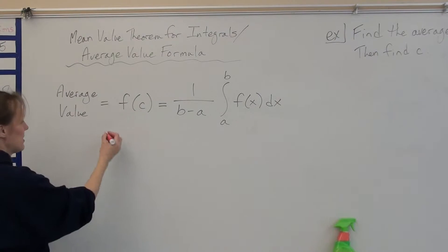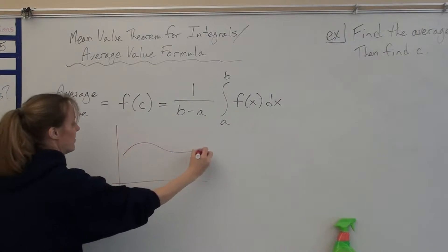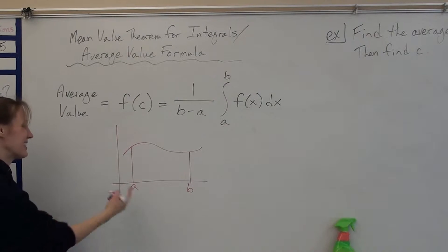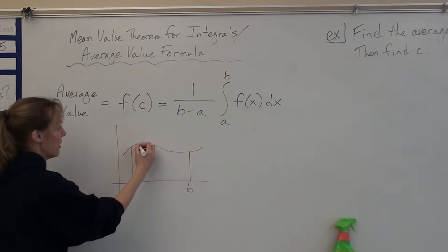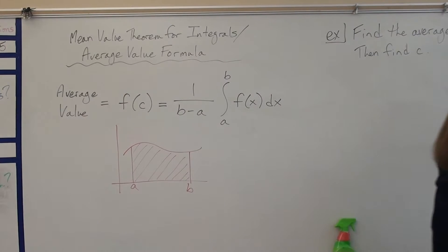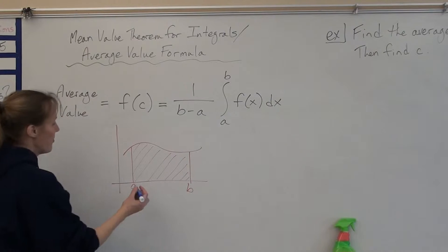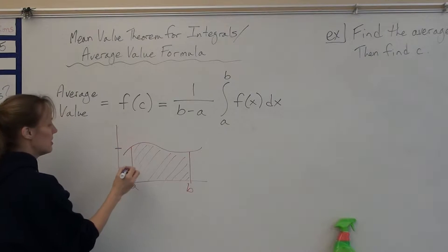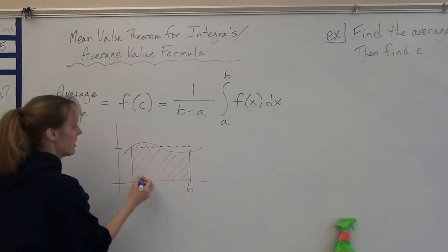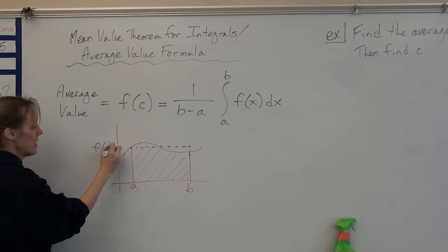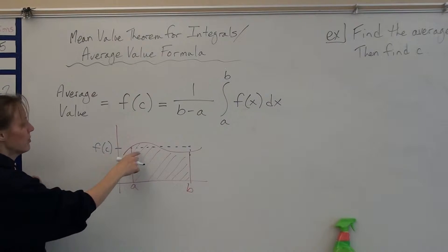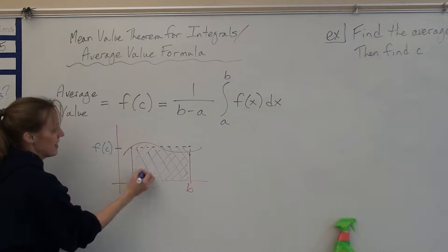Now graphically, this means this. If I have a function on some interval from a to b, it looks like a pi. I know, it does look like a big pi symbol. So I've got this area under the curve. The average value of a function is the y value of a rectangle that produces the same area on this interval as the area under the curve. So if I were to sketch a rectangle in here, your height of this rectangle is considered the average value of this function.